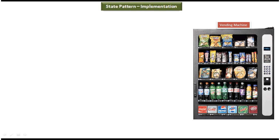Now we will see the scenario where we can use state design pattern. A vending machine is a very good example of state design pattern. Suppose you want to get one product from the vending machine — say you want to get Pepsi. Then what you have to do is select the product, which is Pepsi, and then insert the money. Suppose Pepsi costs 30 rupees — you have to insert 30 rupees, and then the vending machine will dispense the Pepsi. This is how the vending machine works.